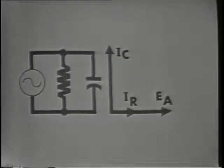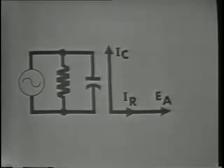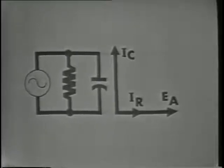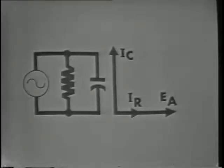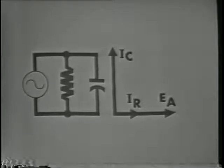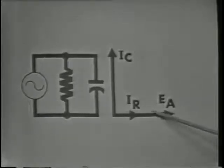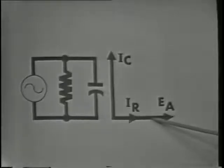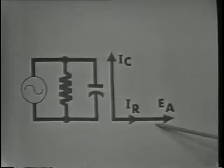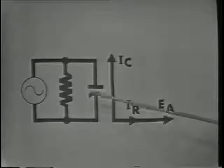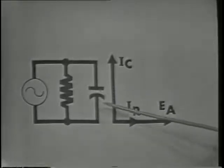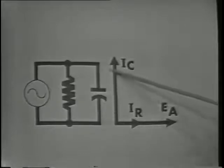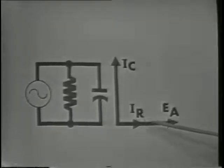The resistor never introduces a phase shift in any circuit, while the capacitor causes a phase difference between current and voltage in any kind of circuit connection. This phase difference may be shown with vectors. In parallel, as in series, the voltage is the reference vector. The voltage across a parallel branch is the same, thus EA becomes the reference vector. The branch currents will show the phase differences.